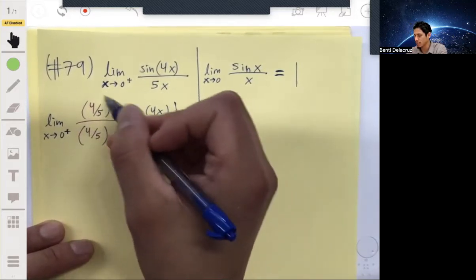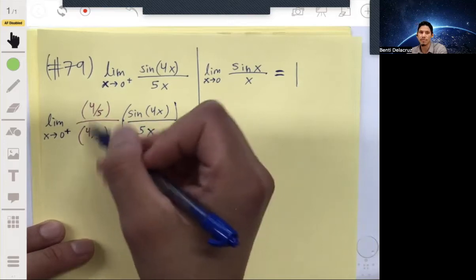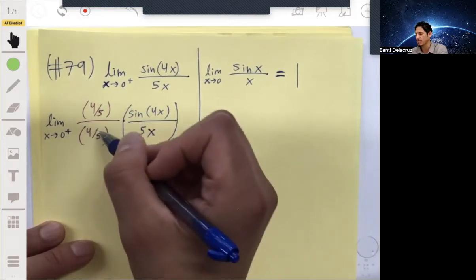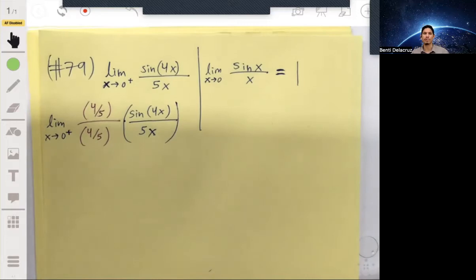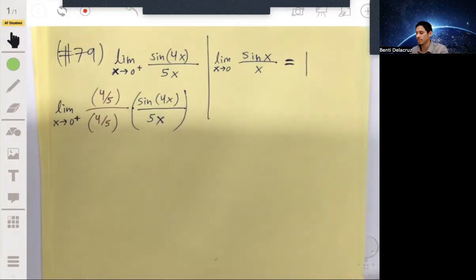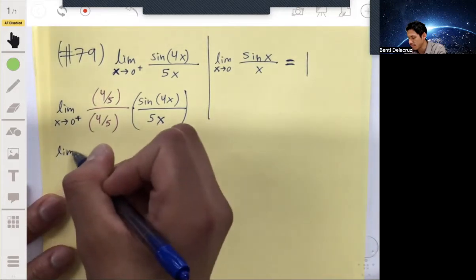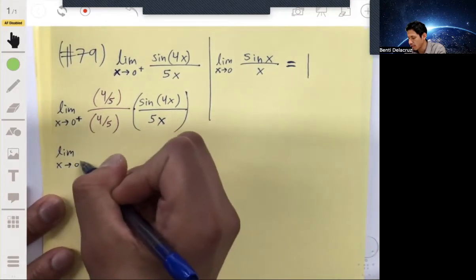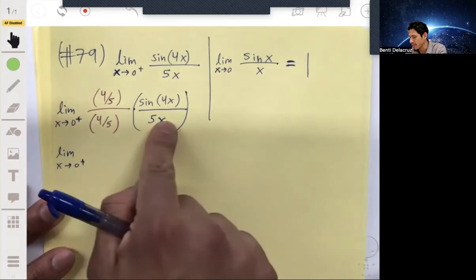Remember, this whole thing is just another version of one. Four-fifths divided by four-fifths is just equal to one, it's just a weird looking way to write one.